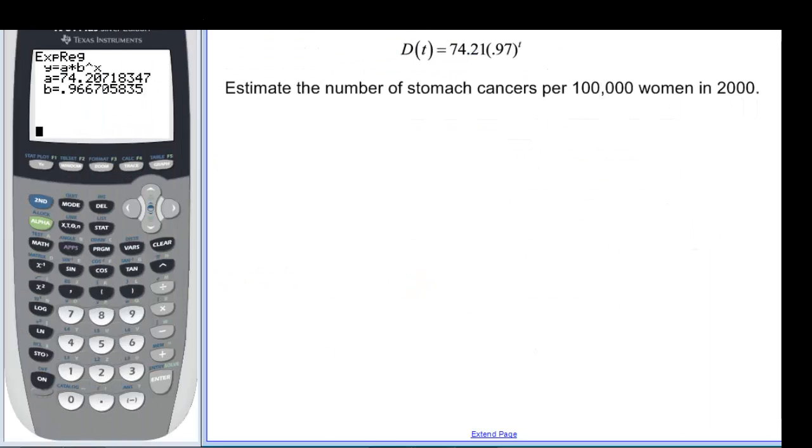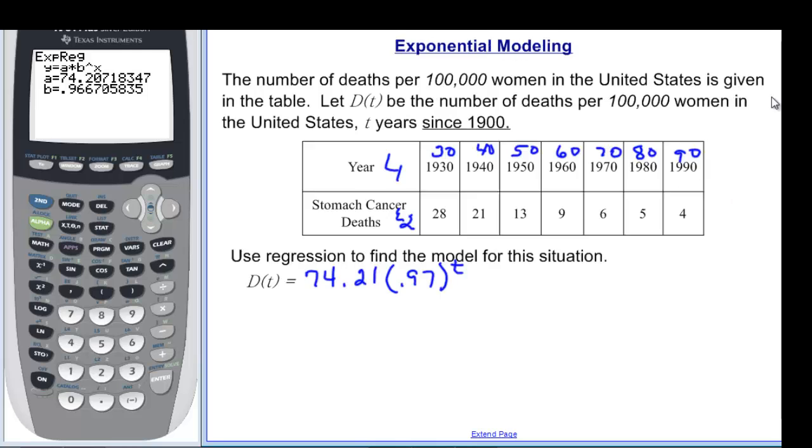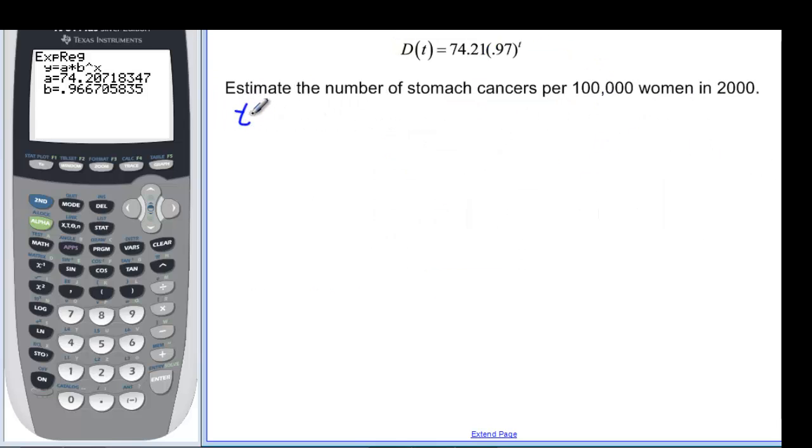So here I have my function written again, just to remind us, estimate the number of stomach cancers per 100,000 women in 2000. Well, it was beginning, if you go back and read the problem again, it was since 1900. So in 2000, we know that t, that's a year, so we know that t is going to be 100 years later.